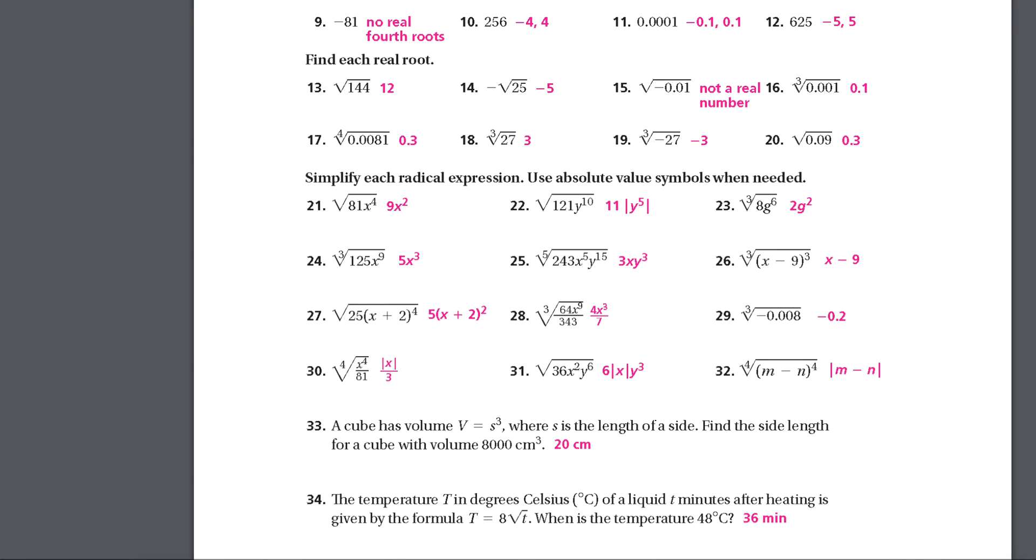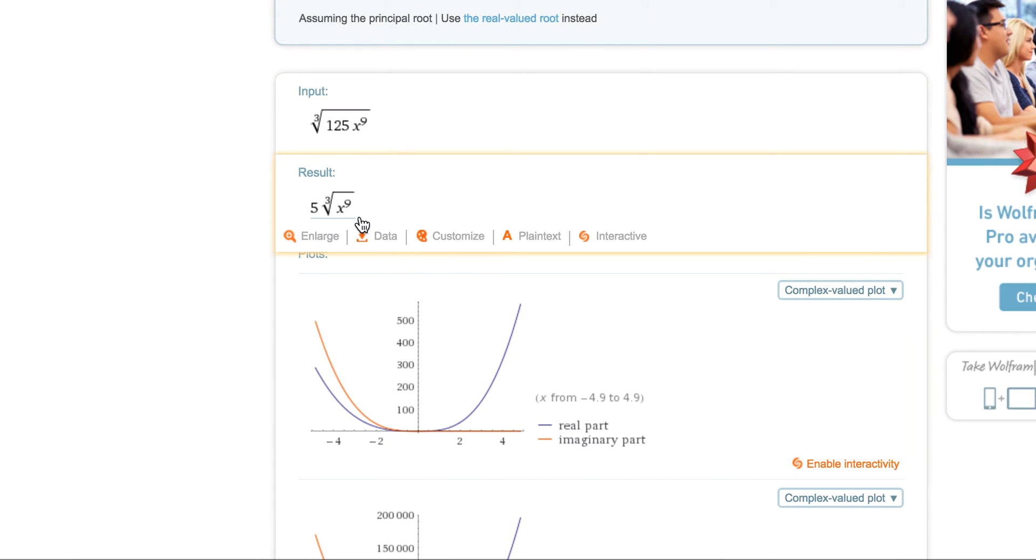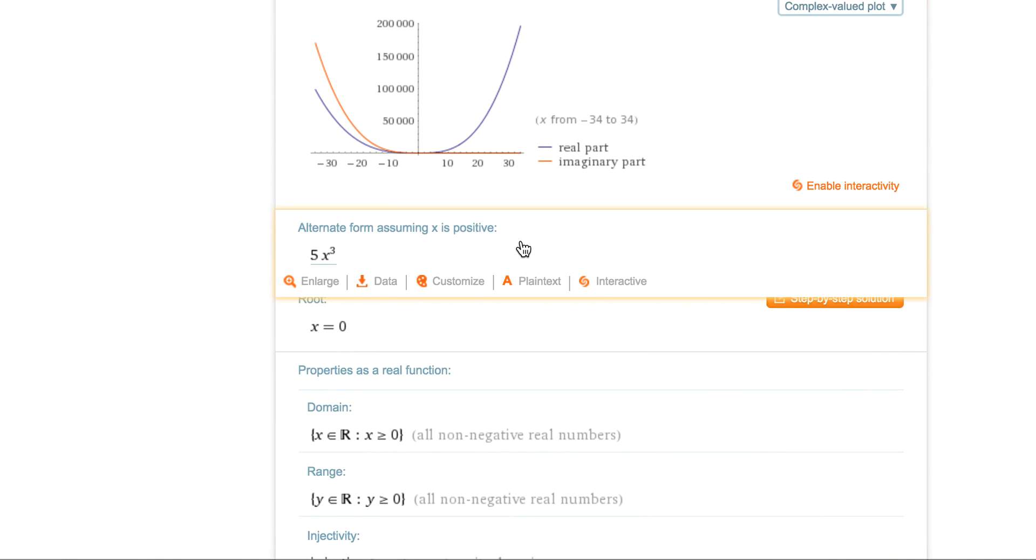Let's see, is that the same as what they had? They had 5 x to the 3rd. Well, I guess you could say that is the same. I'm surprised it didn't simplify it. Oh, there it is. Alternative forms, assuming x is positive. That's good.